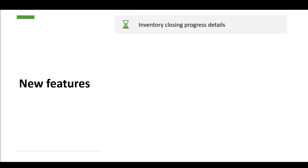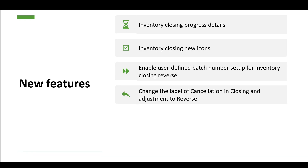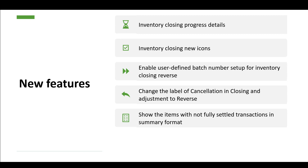The inventory closing progress details feature will be released in App 10.0.21. A new progress detail view will be added to the closing and adjustment form so you can monitor and review the progress of the recalculation or closing record. We'll also review the new icons, how to run the inventory reverse process in multi-threading, and how to review not fully settled transactions — either in detailed transaction level or summarized item level view.